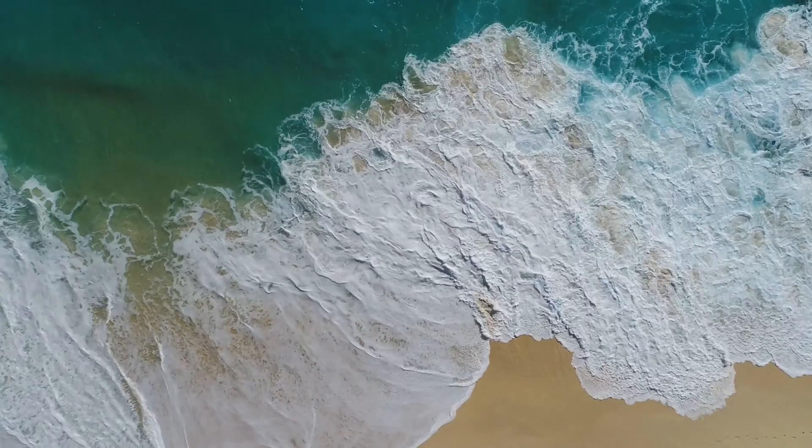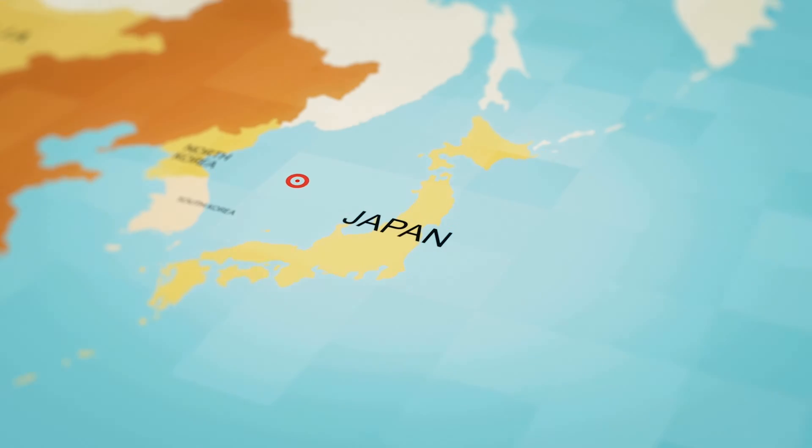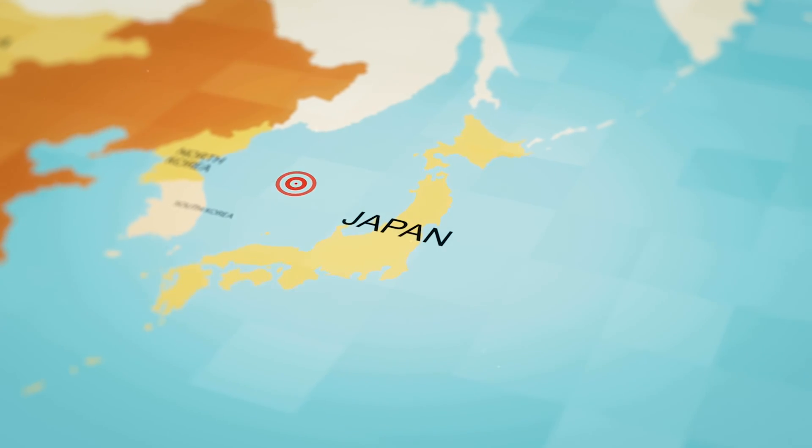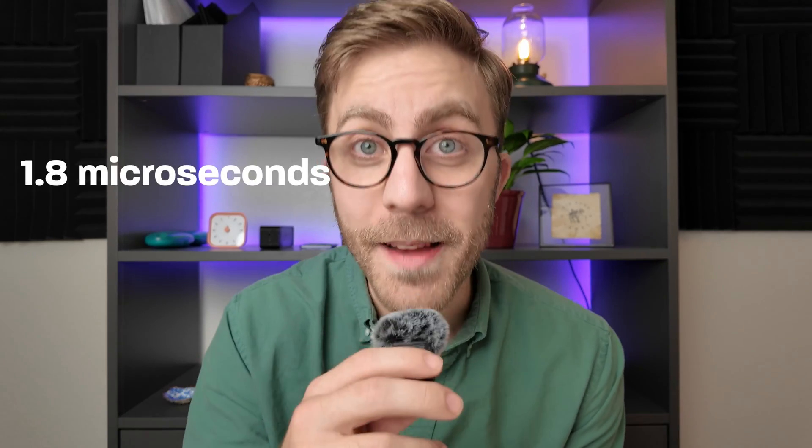You see, lots of things can change the speed the Earth rotates — friction from the tides, melting ice caps, even earthquakes. A 2011 earthquake in Japan sped up the rotation of the Earth by 1.8 microseconds. Because of this, we actually need to add leap seconds every couple of years.